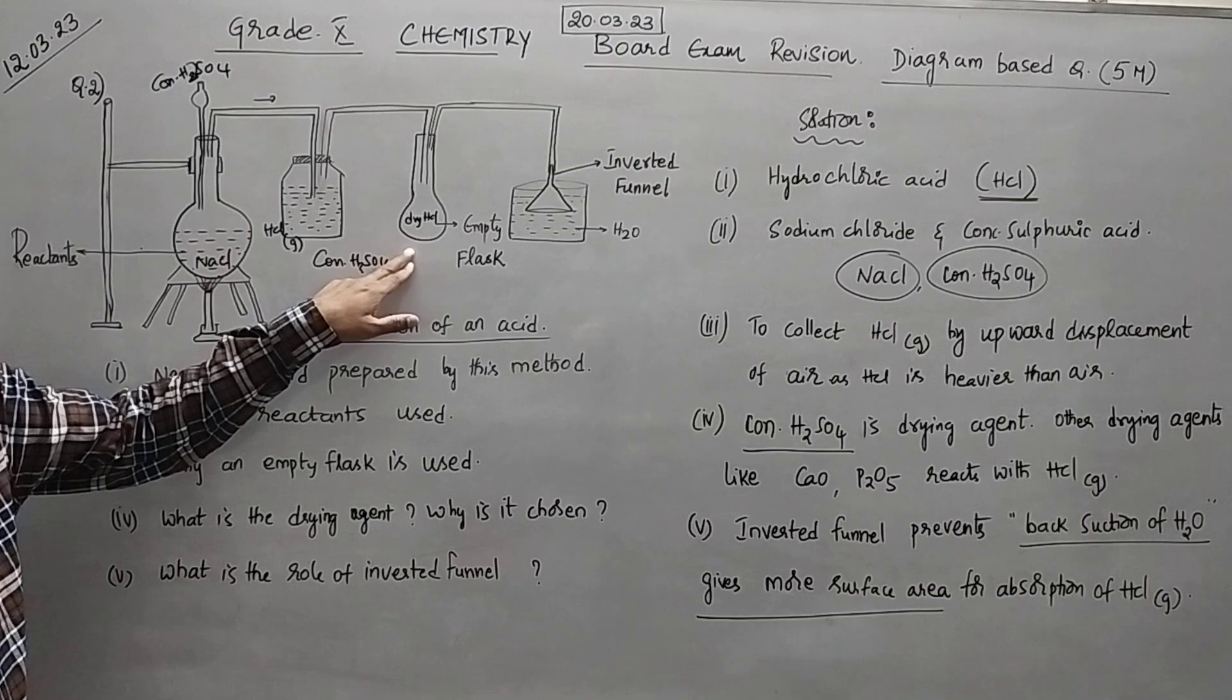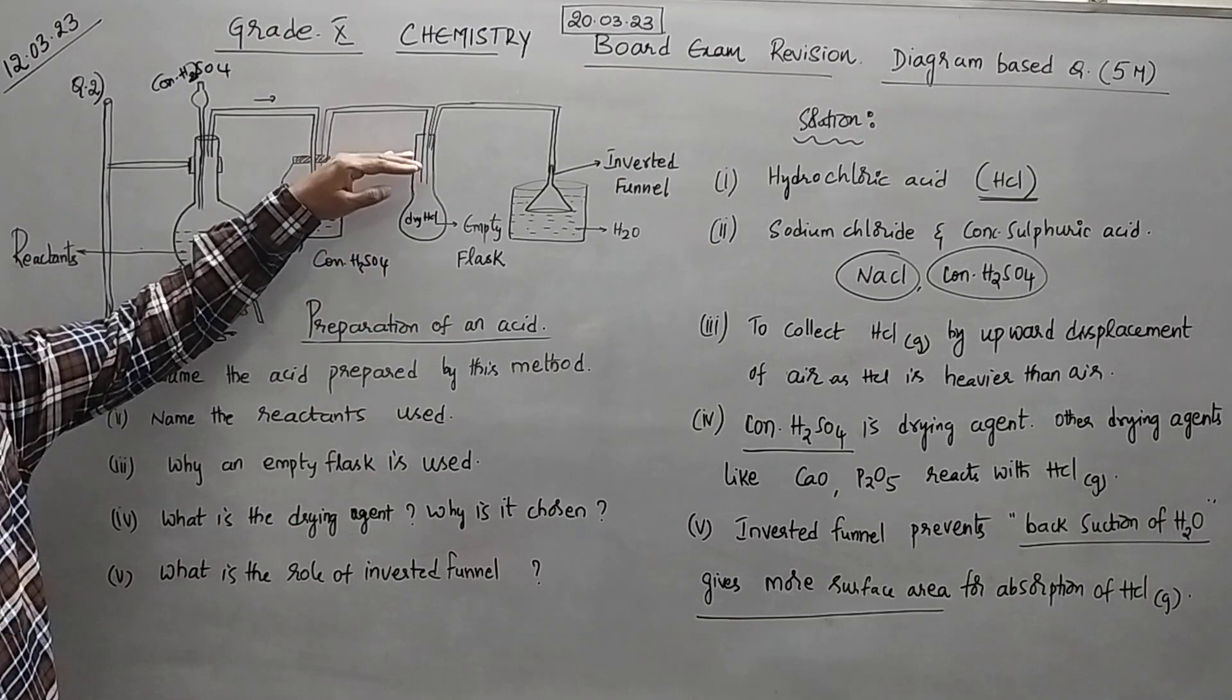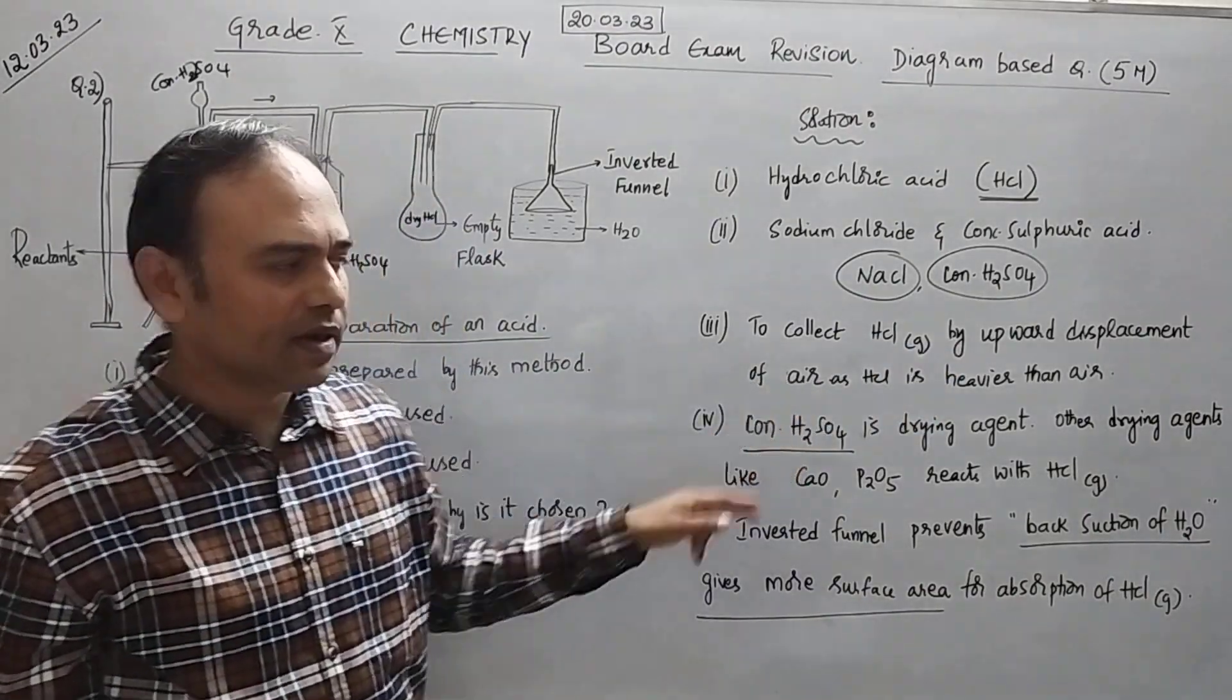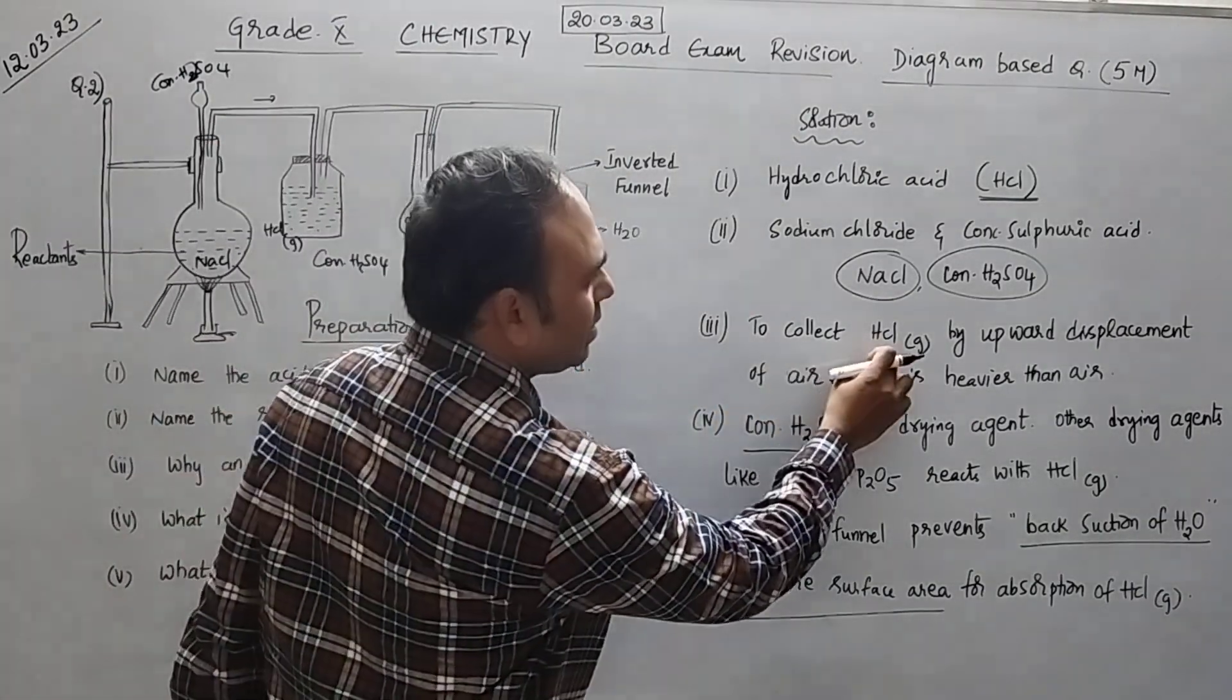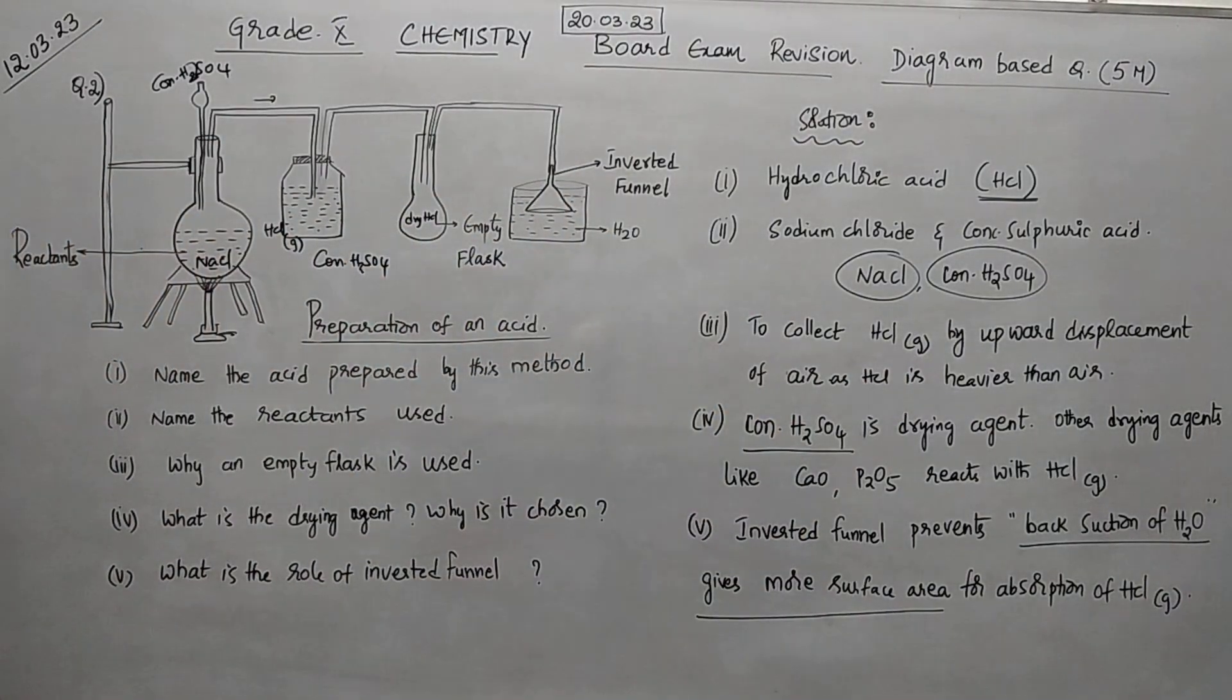You know that HCl gas is heavier than air therefore it will have upward displacement of air. So here what is the role of empty flask? To collect the HCl gas by upward displacement of air.